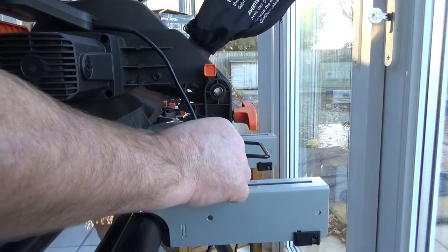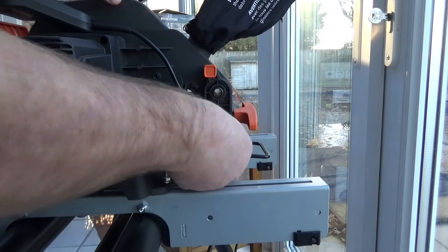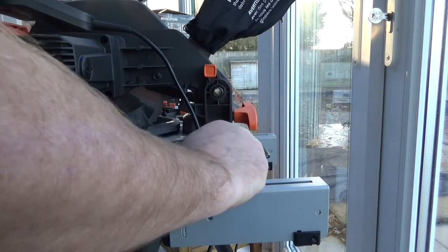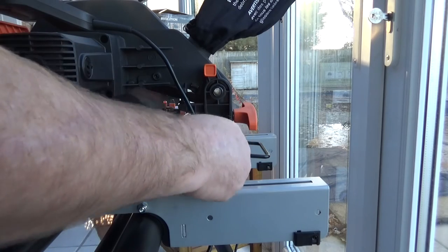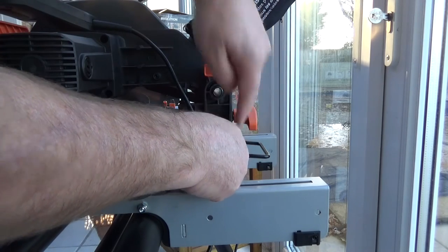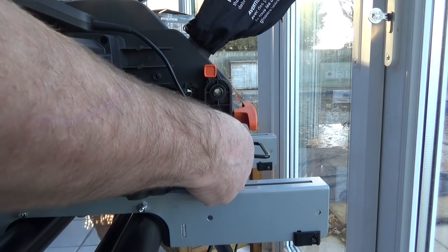We need to take our 3mm allen key. As I turn that, the saw is moving. We need to adjust that, making sure this locking nut doesn't prevent us from putting it where we want it to go until we get it vertical.